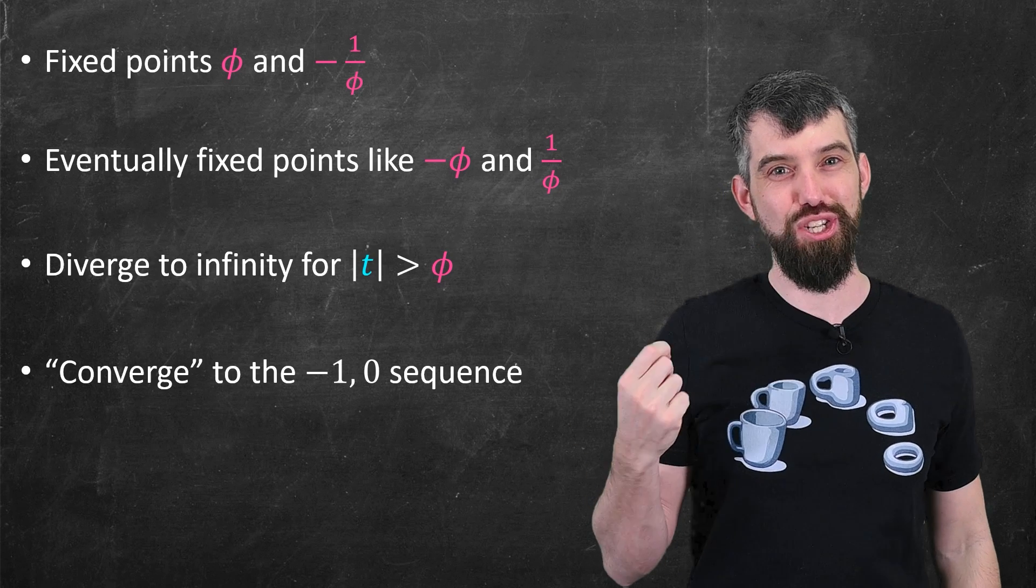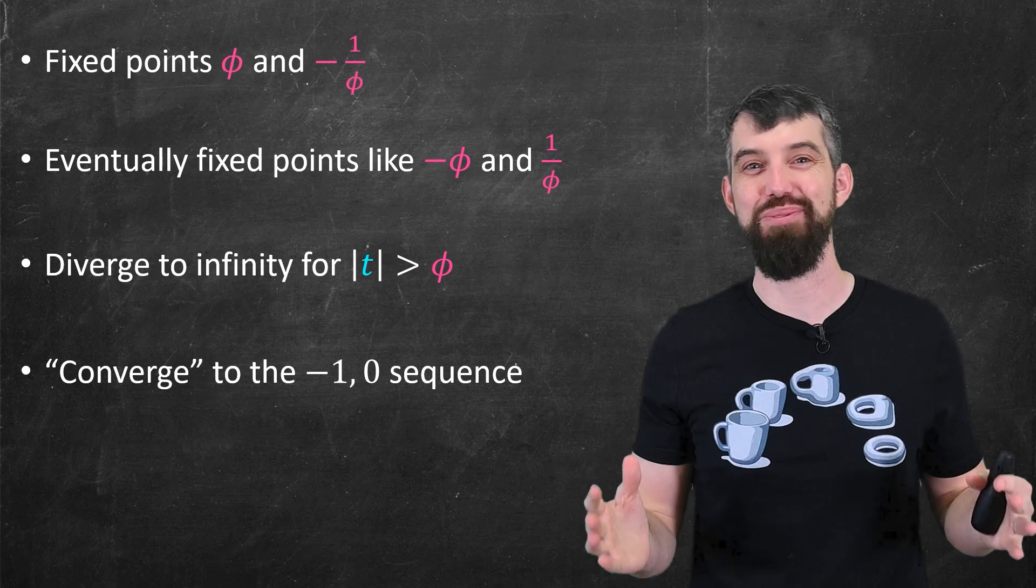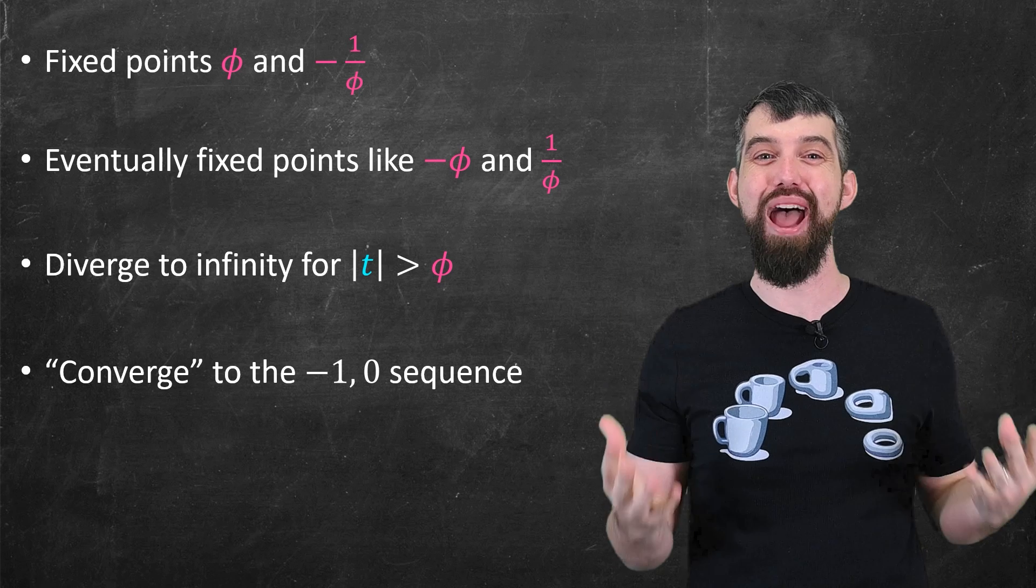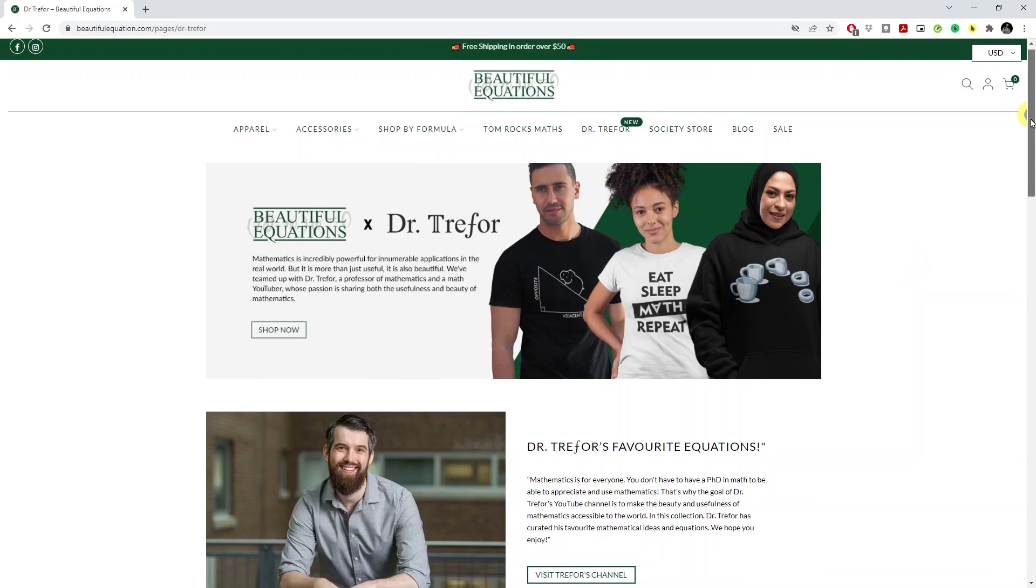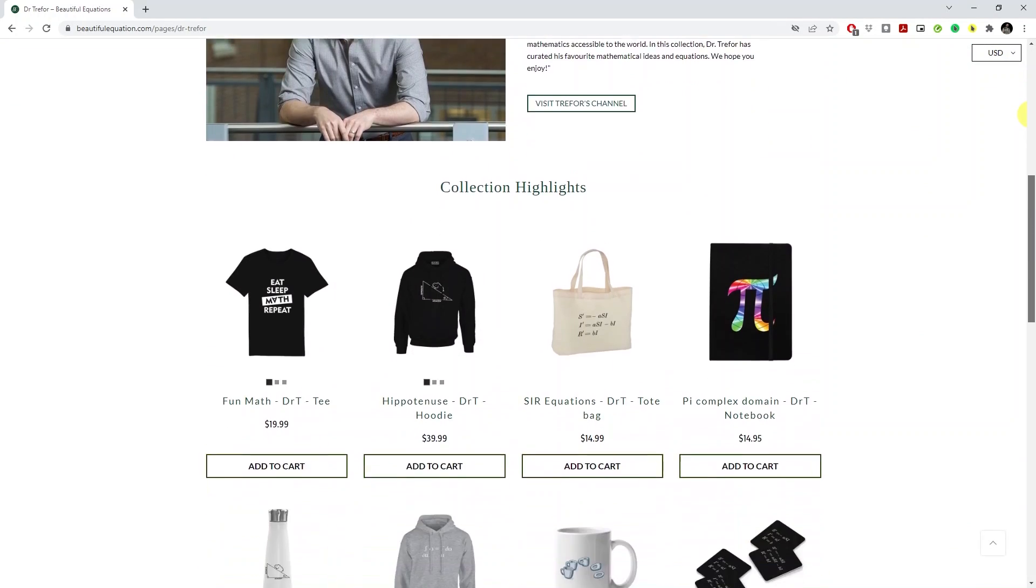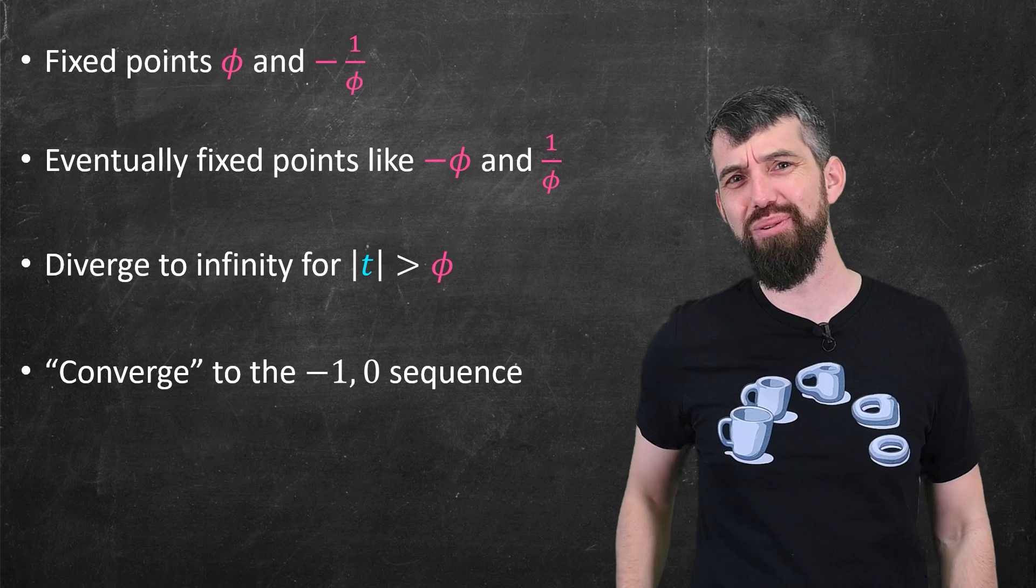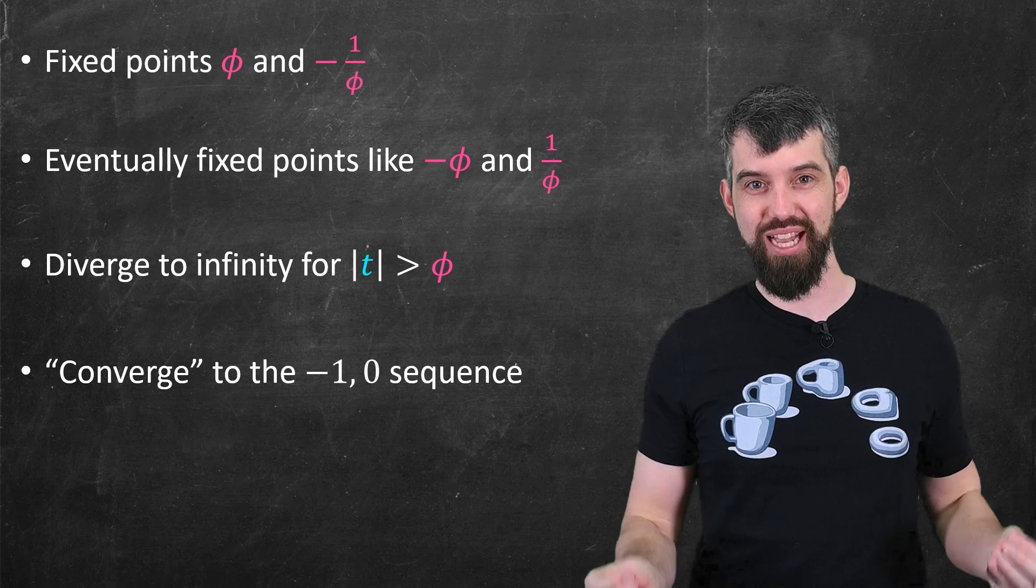Now, if you've been noticing the shirt that I've been wearing, I'm very pleased to announce this is the first video I've managed to do this in. I have a merch line of math merchandise. So you can go and check out beautifulequations.net to check out some merch and maybe get some and support the channel. I always very much appreciate that. Give the video a like for the YouTube algorithm, and we'll do some more math in the next video.